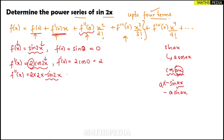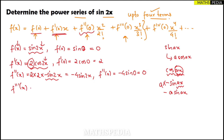So f''(x) = −4sin(2x). Substituting x = 0: f''(0) = −4·sin(0) = −4·0 = 0. Since this value is 0, the entire second-derivative term drops out of the series. Now for the third derivative, we differentiate −4sin(2x).